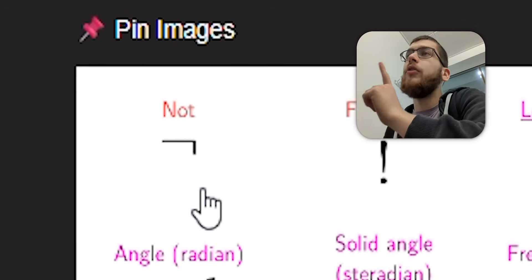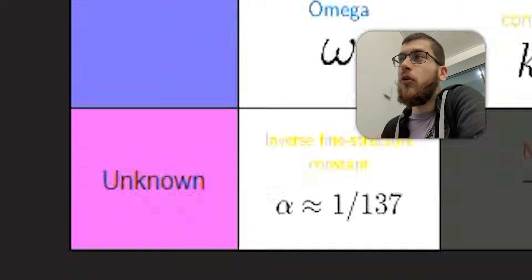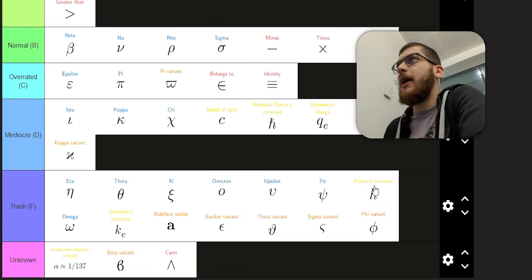Next, you've got the not symbol. Which I'm not a huge fan of. Get it? I just don't get why this is not. Maybe there's an explanation. Maybe one of you guys knows why not looks like that. But, I mean, it's unique. And it makes sense. And it's easy to write. So I'd just say it's normal.